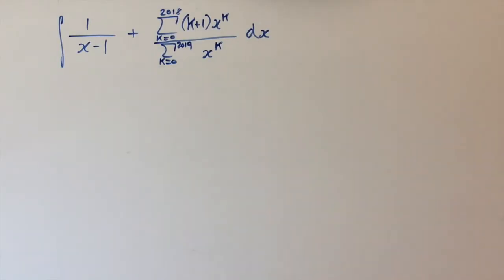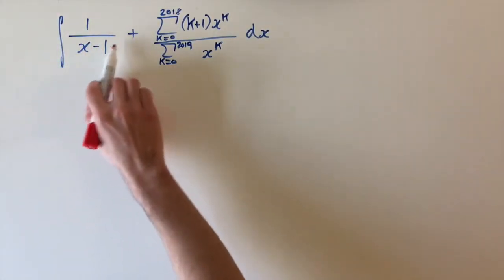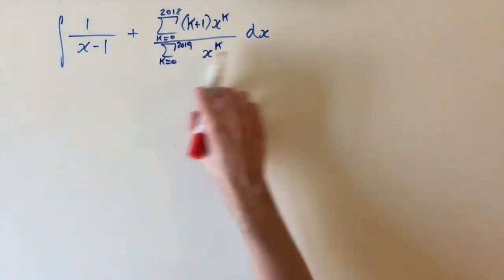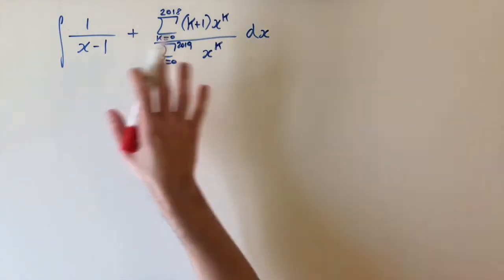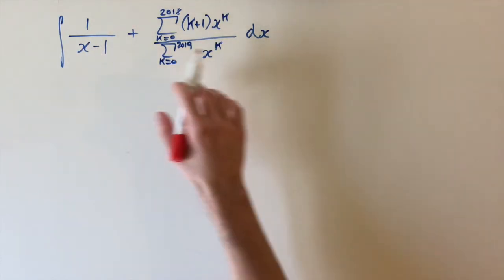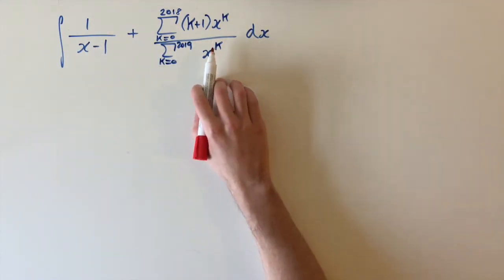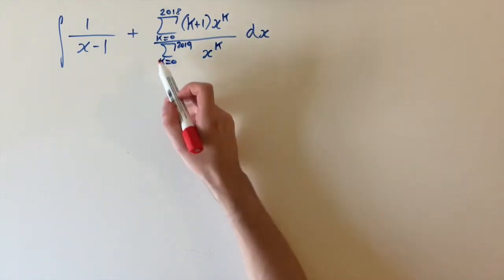Okay, we've got a very interesting integral to look at today. We have the integral of 1 over x minus 1 plus this ratio of these two series. Now, this first term is something we can integrate already. That's just going to be the log of x minus 1. But this is a lot more complicated. We can't really cancel any factors because we're adding them.